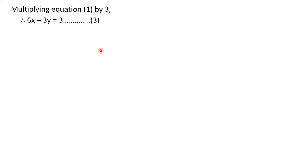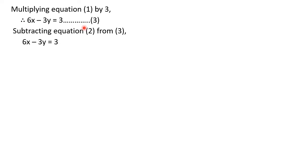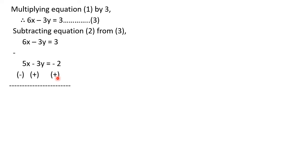In equation 2 we have −3y and in equation 3 we also have −3y — the signs are the same, so we subtract equation 2 from equation 3. Subtracting: (6x − 3y = 3) minus (5x − 3y = −2). Changing signs of equation 2: −3y becomes +3y, which cancels. We get 6x − 5x = 3 + 2, so x = 5.